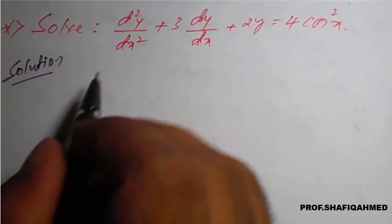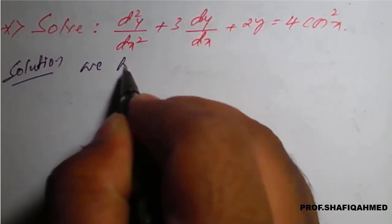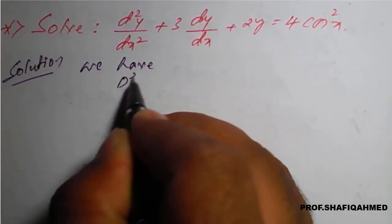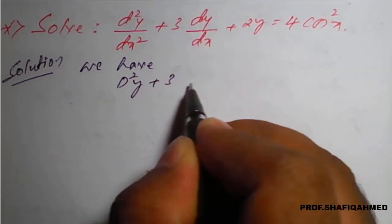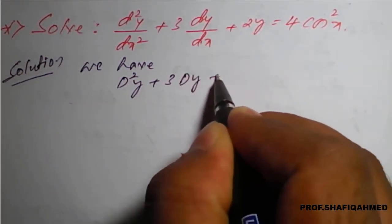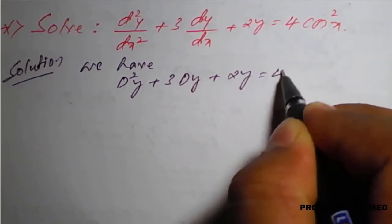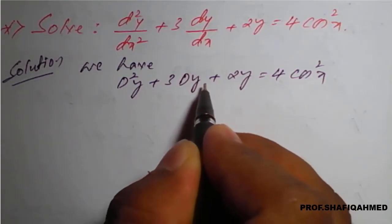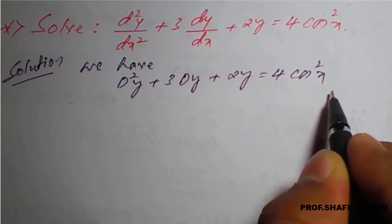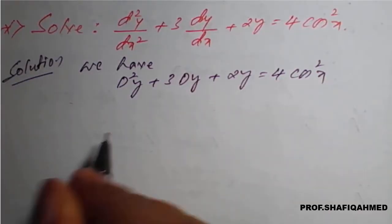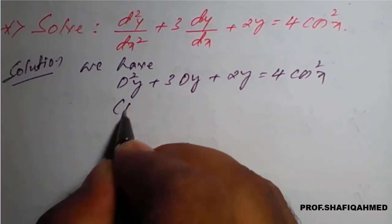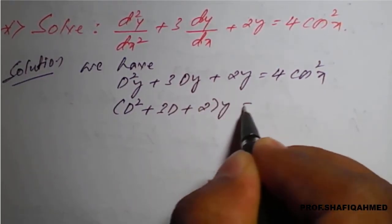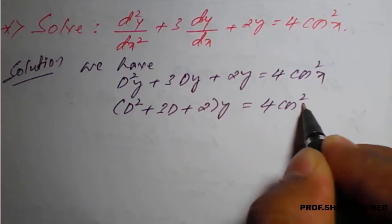The given differential equation can be written as: d²y/dx² + 3(dy/dx) + 2y = 4cos²x. So, for the left-hand side we will get a complementary function, and for the right-hand side we will get a particular integral. Taking y common, we get (D² + 3D + 2)y = 4cos²x.